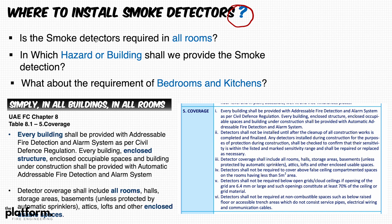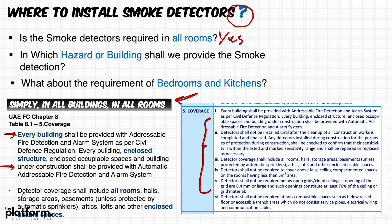Where should smoke detectors be installed — kitchens, bedrooms, corridors? The answer is: in all buildings and in all rooms. Referring to the UAE Fire Life Safety Code of Practice Chapter 8, every building shall be provided with an addressable fire alarm and detection system. This includes structures, habitable spaces, and buildings under construction. Detector coverage shall include all rooms, halls, storage areas, basements, and every enclosed usable space.